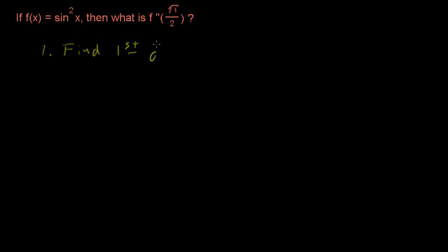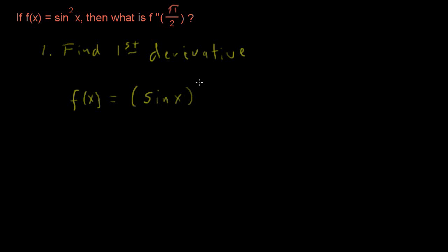Step 1: if we're going to find the second derivative, we first need to find the first derivative. Let's rewrite our problem — it's originally shown as sine of x squared. We can rewrite it to bring to mind how to take the derivative, and that is to use the chain rule.